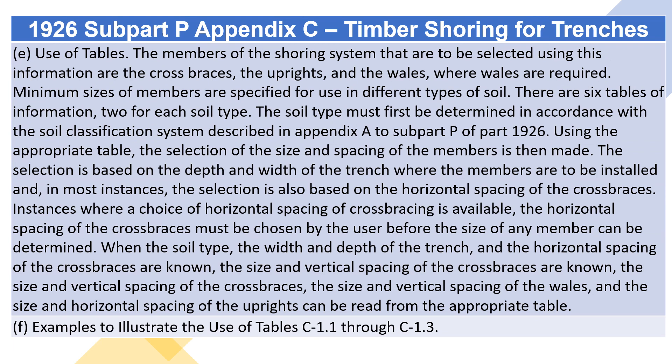E. Use of Tables. The members of the shoring system that are to be selected using this information are the crossbraces, the uprights, and the whales, where whales are required. Minimum sizes of members are specified for use in different types of soil. There are six tables of information, two for each soil type. The soil type must first be determined in accordance with the soil classification system described in Appendix A to Subpart P of Part 1926. Using the appropriate table, the selection of the size and spacing of the members is then made. The selection is based on the depth and width of the trench where the members are to be installed and, in most instances, the selection is also based on the horizontal spacing of the crossbraces.